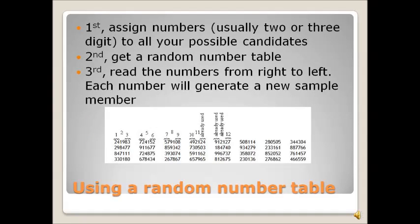How can we use a random number table or a random number generator to do random sampling? You can see a sample here at the bottom of a random number table. So the first thing you're going to do is assign numbers, which are usually two or three digit, but could be more than that, to all your possible candidates.